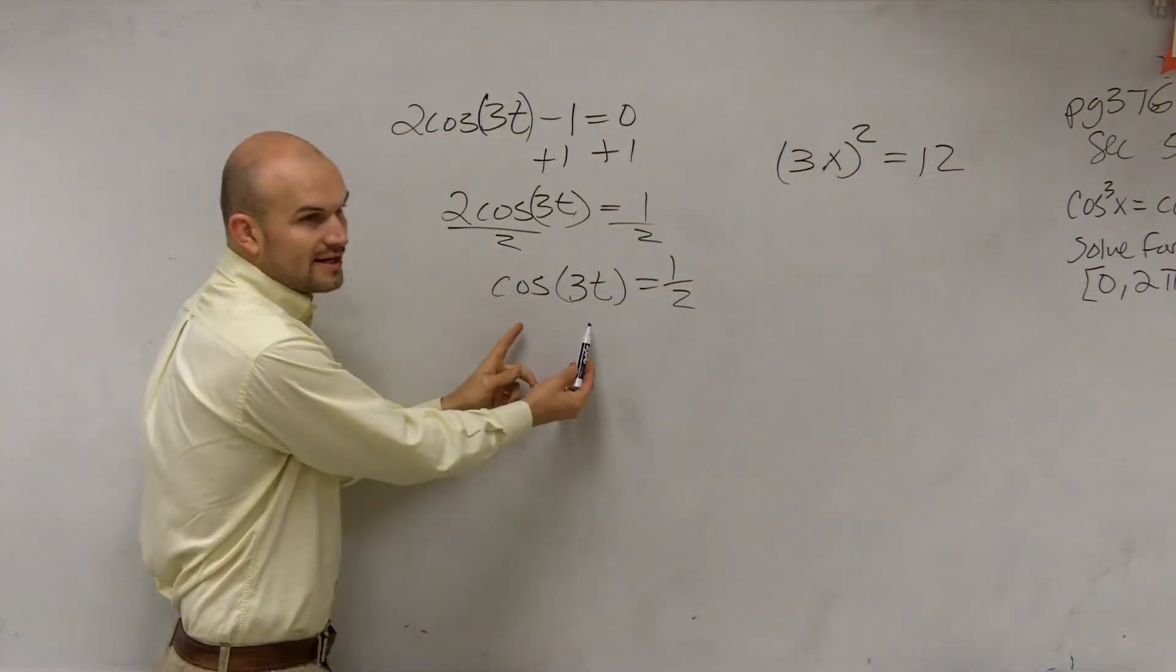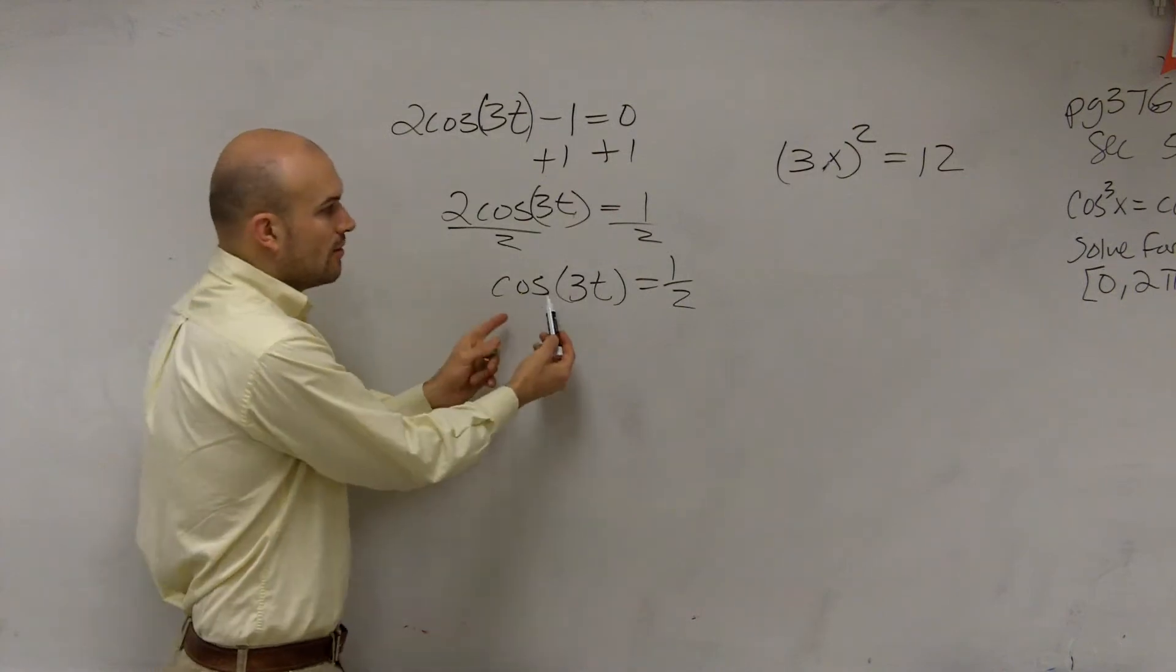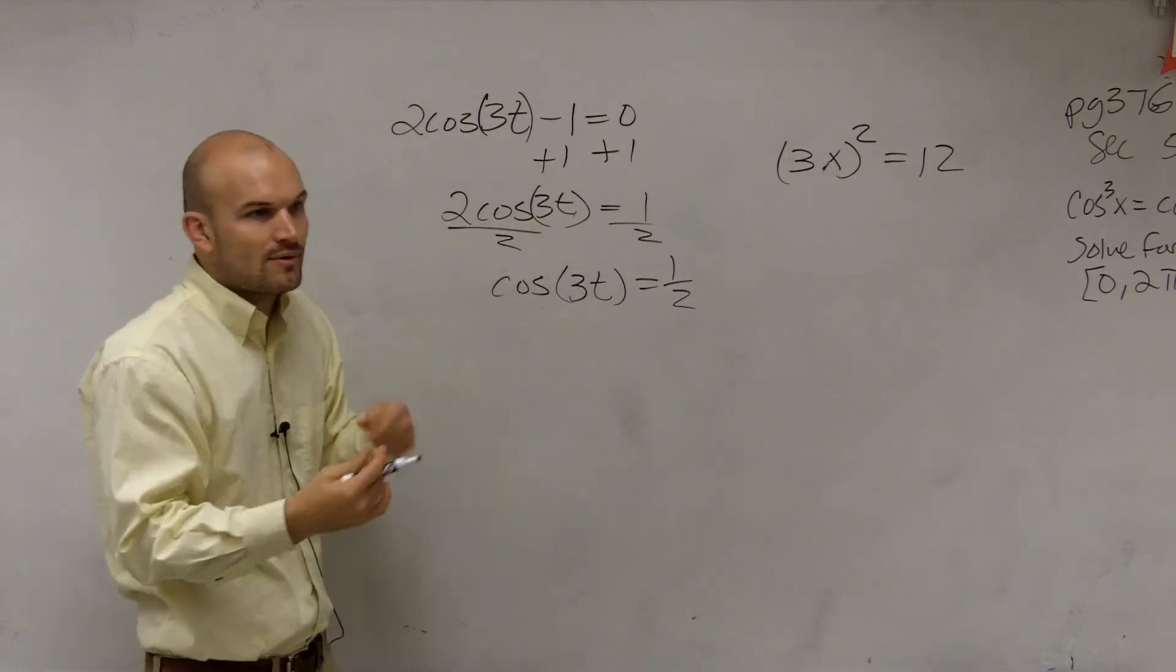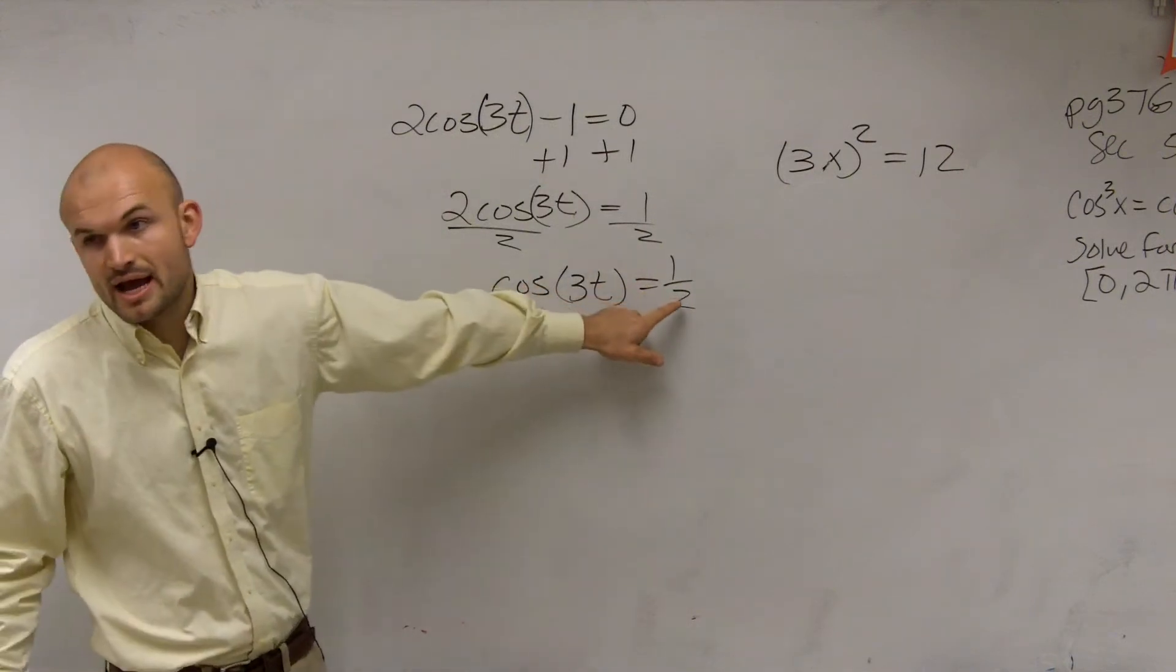The same thing here. We can't divide by 3 until we undo the cosine. Okay? So we don't really undo the cosine right now. We're not using the inverse. But what we're doing is we're finding the values of cosine at 1 half.